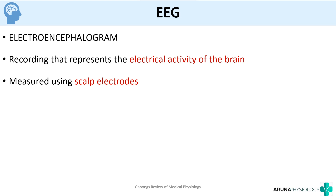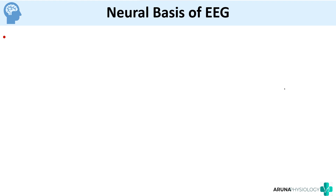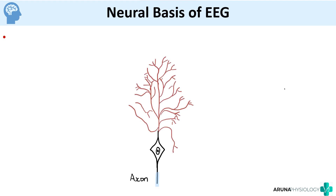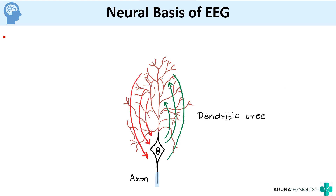Now we will move on to what is the neural basis of EEG, or what causes EEG. Suppose this is a neuron and this is a dendrite. We know that based on the neurotransmitter release, there can be an EPSP or IPSP that is developed at these dendritic sites. Based on the neurotransmitter that is released, they can develop an EPSP or IPSP at each of these active synaptic knobs. So basically EEG is going to measure those summated EPSPs and IPSPs — that is being recorded by the electroencephalogram.